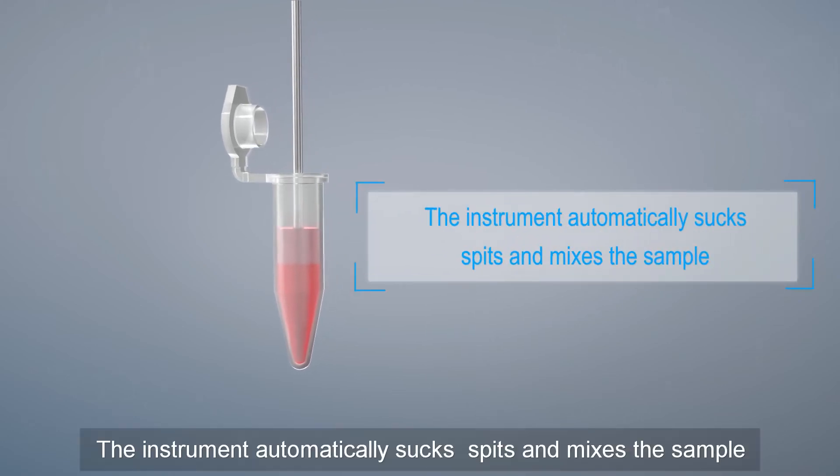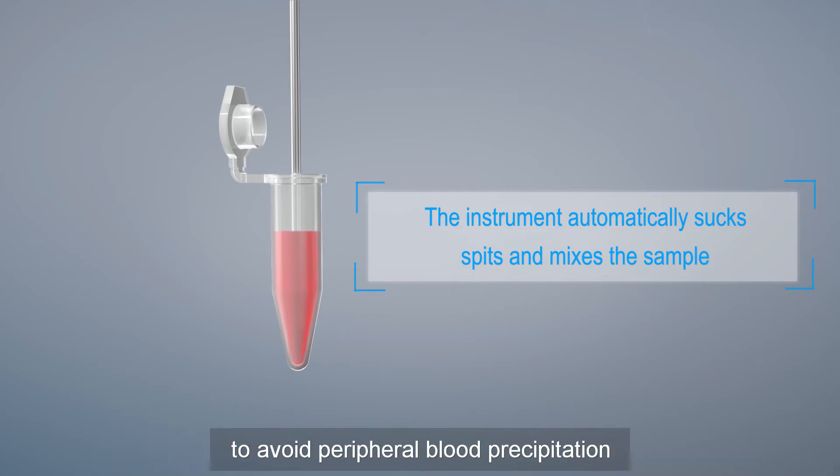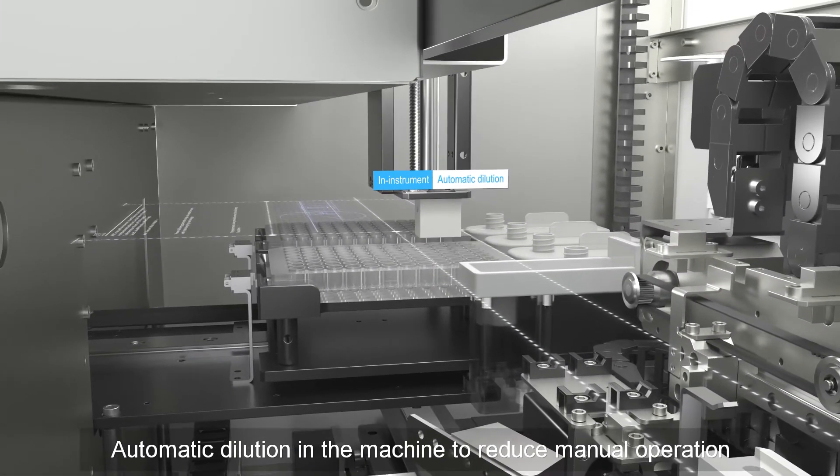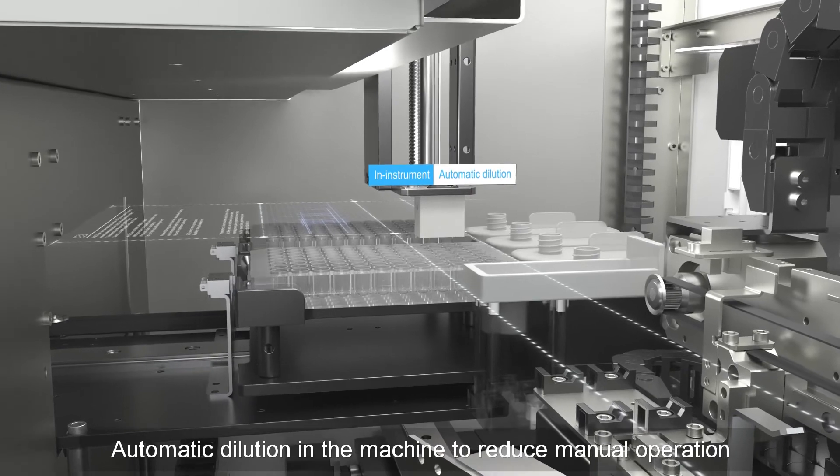The instrument automatically sucks, spits and mixes the sample to avoid peripheral blood precipitation. Automatic dilution in the machine reduces manual operation.